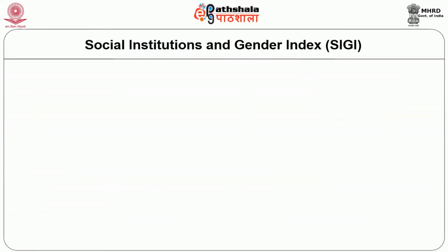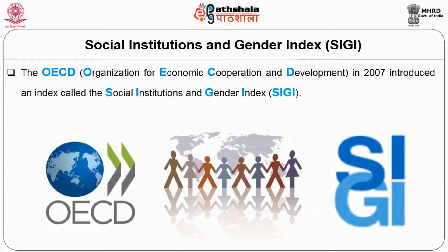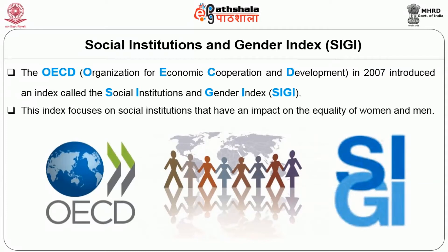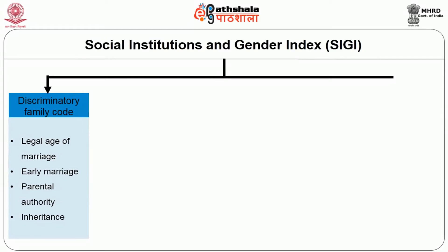Now we have the Social Institutions and Gender Index, SIGI. The OECD introduced this index in 2007. It focuses on social institutions that impact equality of women and men across four dimensions. The first is discriminatory family code — whether women and men have the same legal age of marriage, the same authority to be legal guardian of a child during marriage, custody rights over a child after divorce, and whether widows and daughters have the same rights of inheritance as widowers and sons.